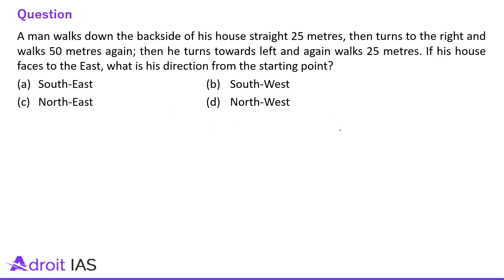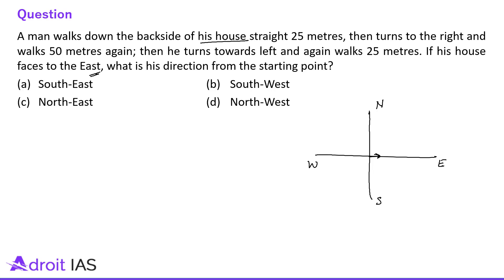The first question says: a man walks down the backside of his house straight 25 meters, then turns to the right and walks 50 meters again, then he turns towards left and again 25 meters. If his house faces to the east — so this is north, south, east and west — if his house faces to the east, the backside of his house is towards the west. So he is going towards the west, straight 25 meters.